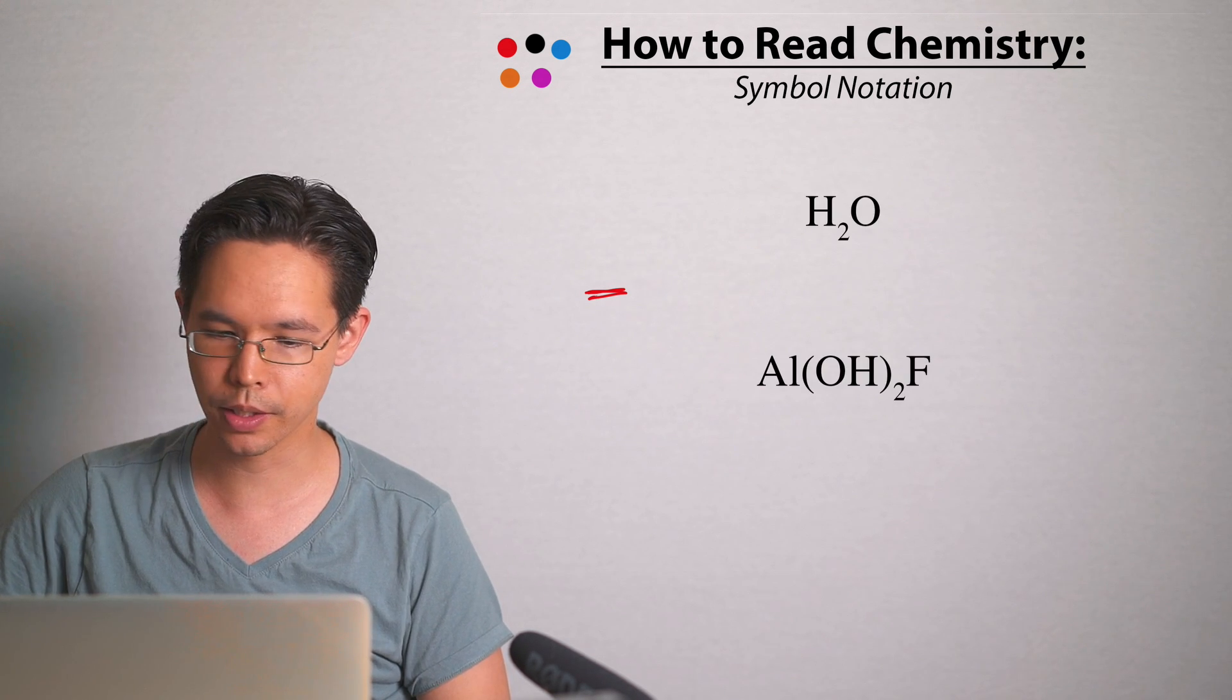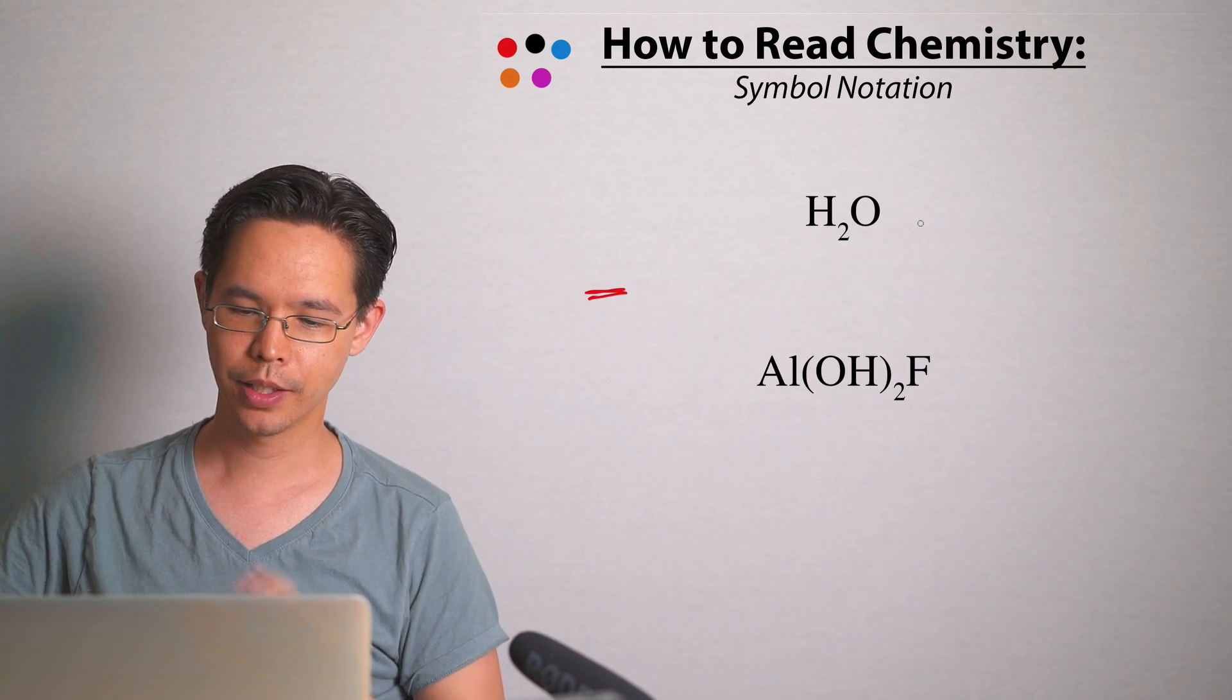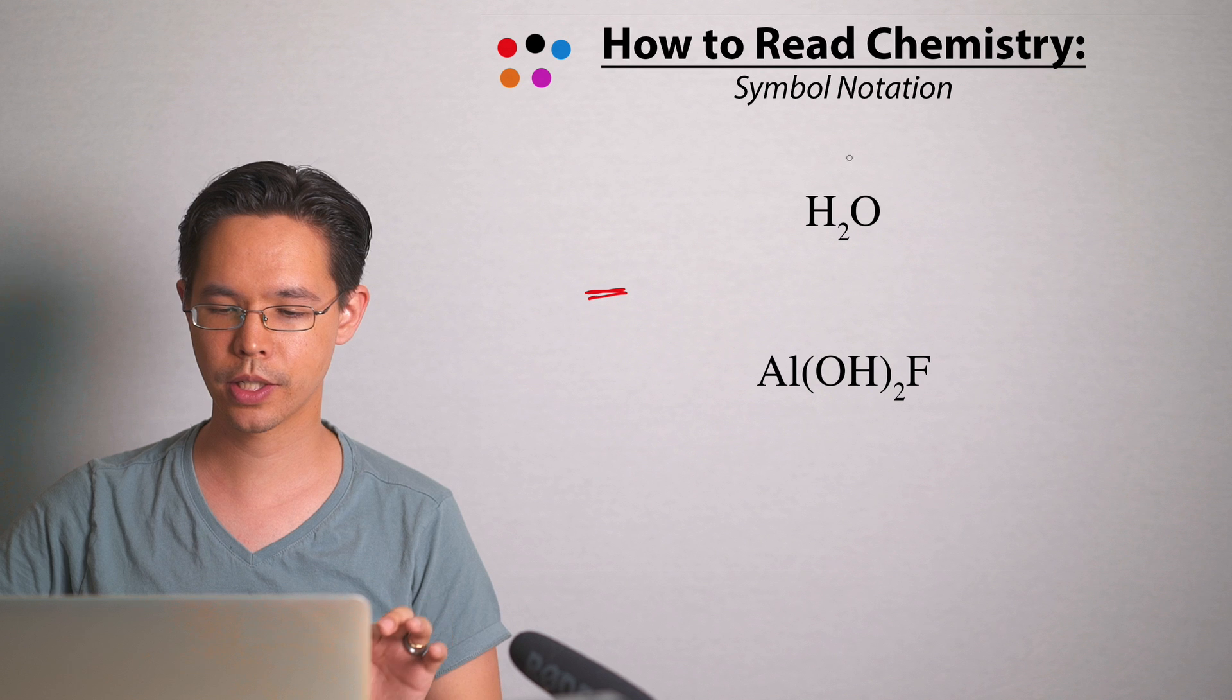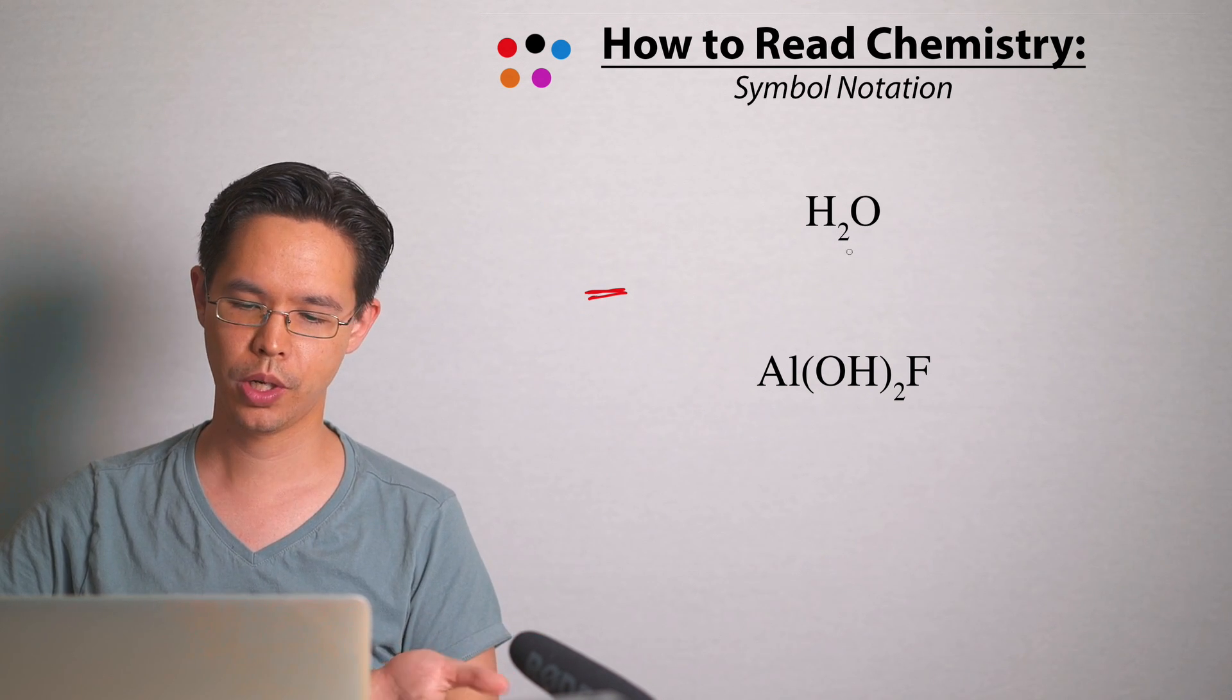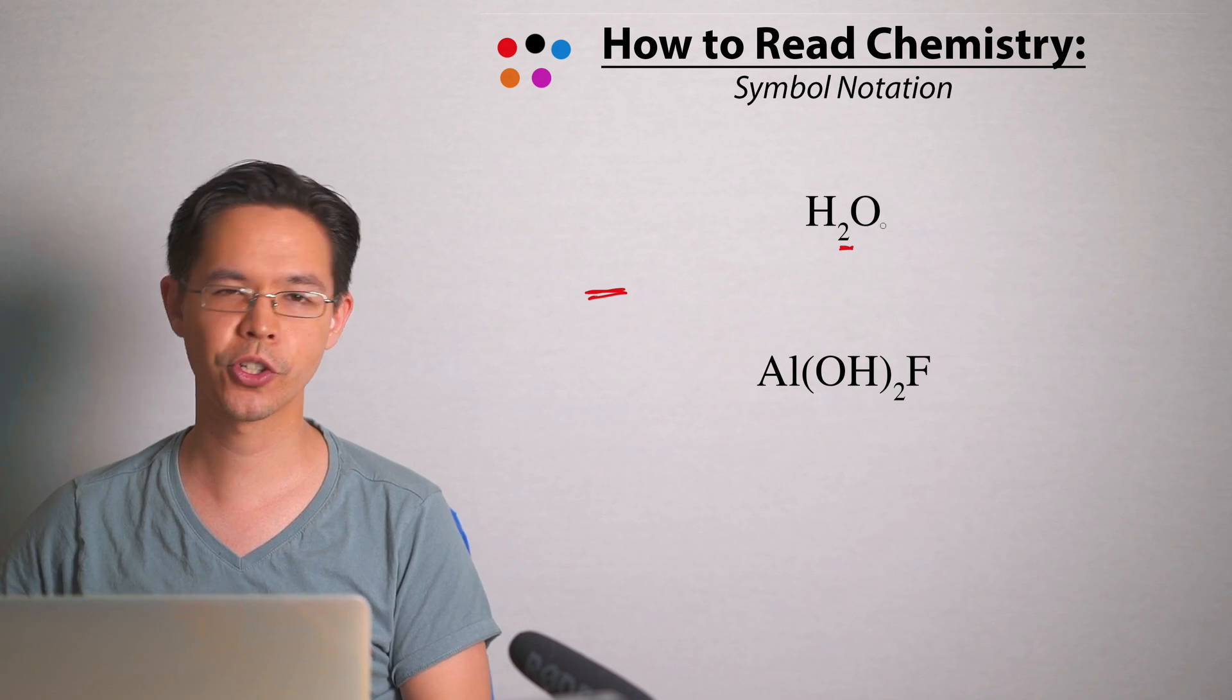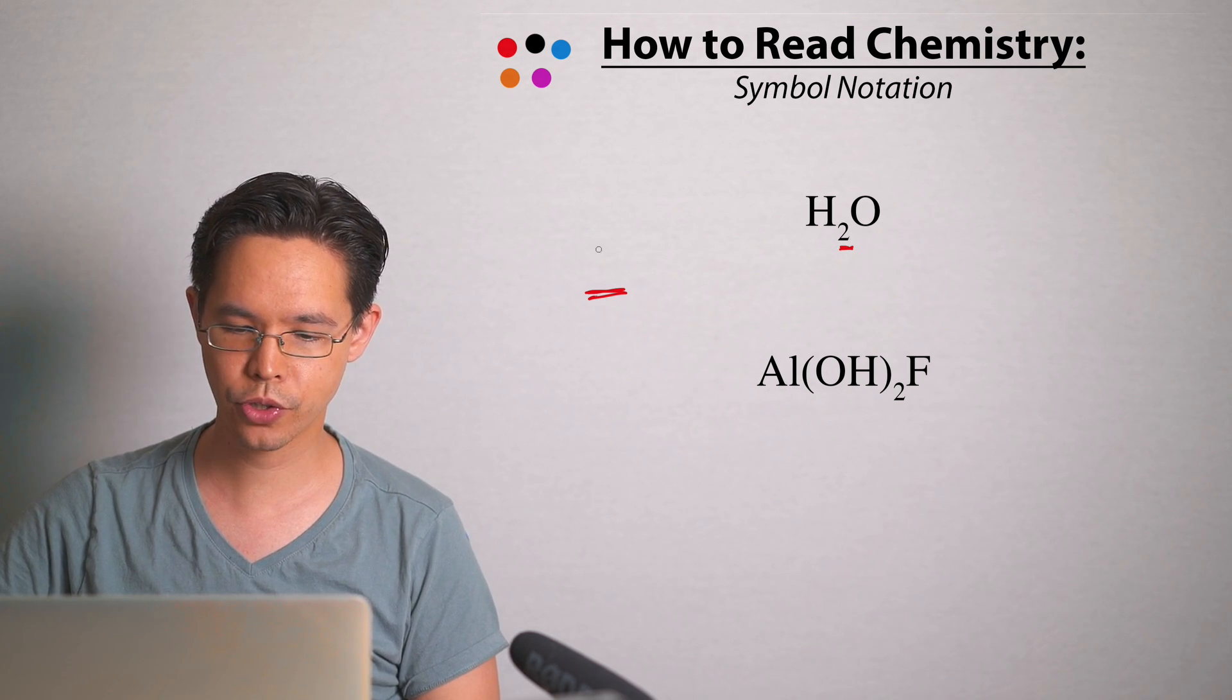We're going to need this information and apply it in the next example. I've got our favorite molecule, which is water. It's got H little two and a capital O, so you can tell straight away it's made of hydrogen and oxygen. But how many of each? Well, I can see the number two and that means it must be pointing to the element on its left, so that means I've got two hydrogens.